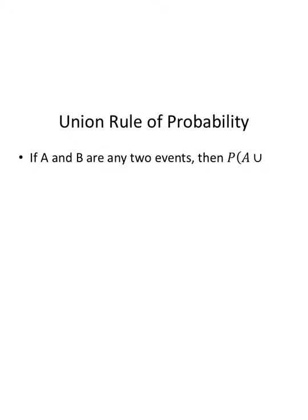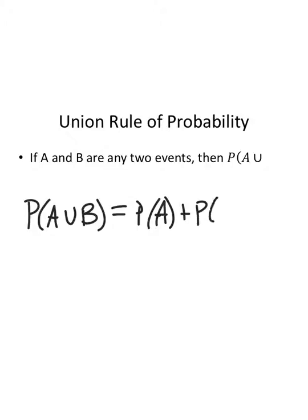The union rule of probability seems to have disappeared from my slide. If A and B are any two events, then the probability of A union B is the probability of A plus the probability of B minus the probability of their intersection. Notice how this is very similar to the union rule of counting. Since probabilities are based on counting, the union rule of probability is the same as the union rule of counting, only a P instead of an N in front of it.